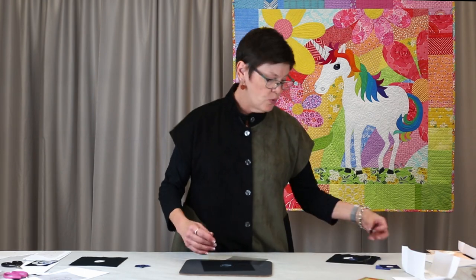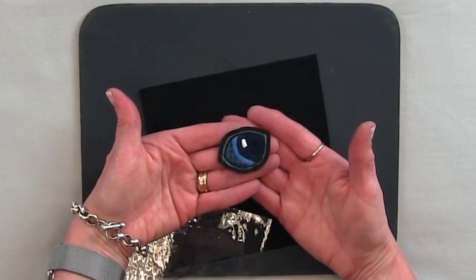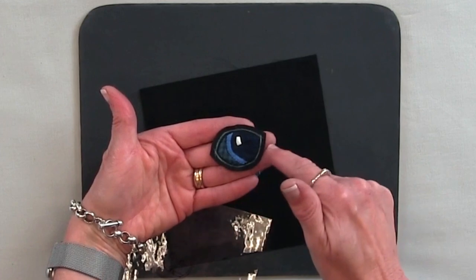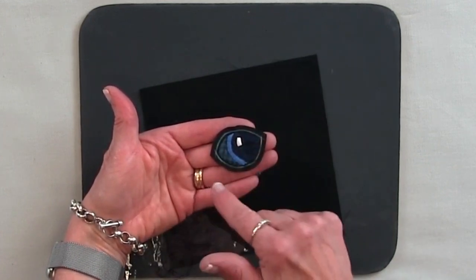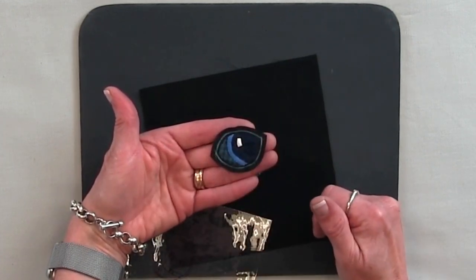What I'm aiming for is a finished eye that looks just like this. Every shape appliqued, one on top of the other, and then cut out as a unit.